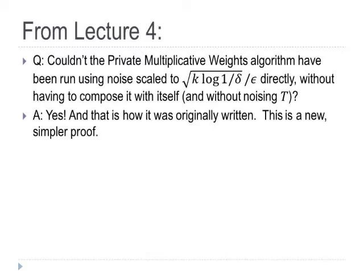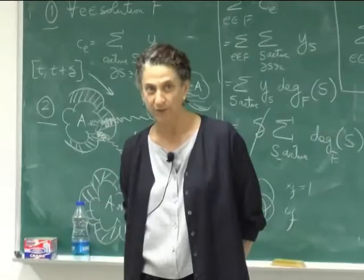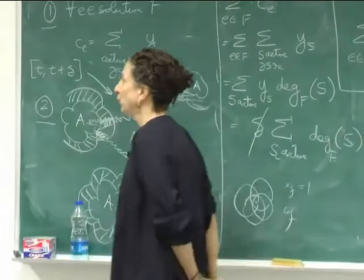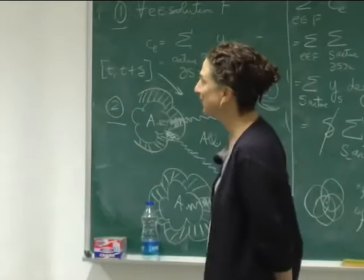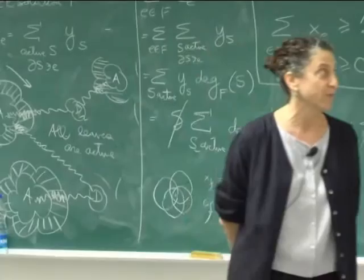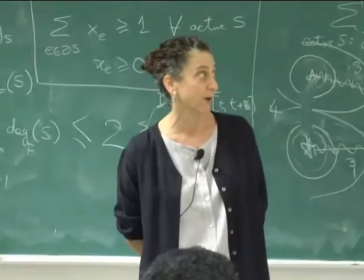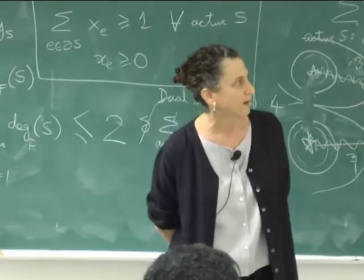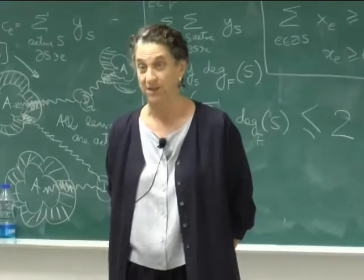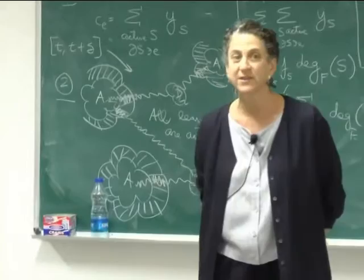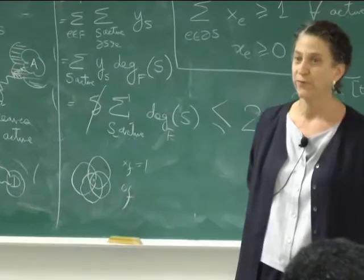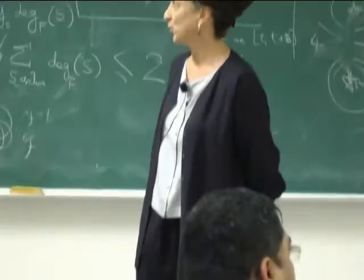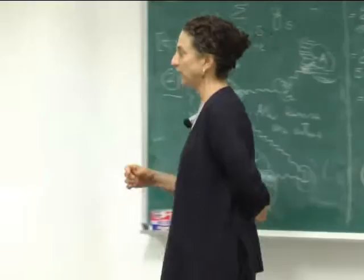Good morning. Before I get on to what I had planned for Lecture 5, I wanted to cover two things briefly from Lecture 4. Mr. Deepak Rajendra Prasad asked a very good question: couldn't the private multiplicative weights algorithm have been run using noise scale to square root K log 1 over delta over epsilon directly, without composing it with itself and without noising the initial threshold? The answer is yes, and in fact that's how the algorithm was originally written. But the proof of privacy is much more complicated than the proof I showed you via composition. The point was to give you a new and simpler proof. But he was right.